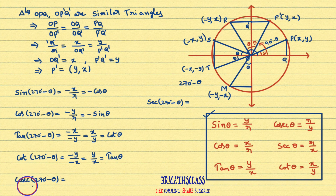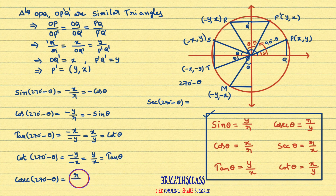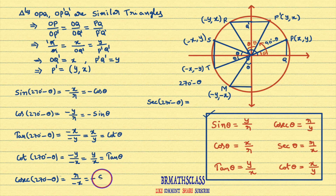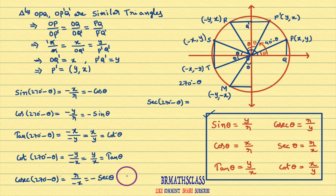Now we will see what is cosecant(270° - θ). cosecant(270° - θ) is defined as radius of the circle divided by y-coordinate of point M. The y-coordinate of point M is -x, so that equals -R/x. R/x is secant θ. Therefore, cosecant(270° - θ) = -secant θ.